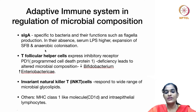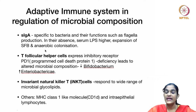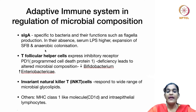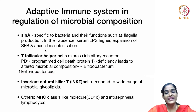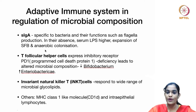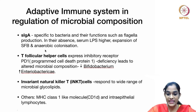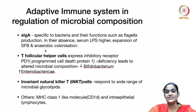T follicular helper cells express the inhibitory receptor PD-1 (programmed cell death protein 1). Deficiency of these cells leads to altered microbial composition — less beneficial bacteria such as Bifidobacterium and more proteolytic bacteria such as Enterobacteriaceae. Invariant natural killer T cells respond to a wide range of glycolipids, and their absence can also alter microbial composition. Other mechanisms include MHC class I molecules and intraepithelial lymphocytes — any defect or polymorphism in these proteins and cells can cause altered microbial composition across the mucosa.